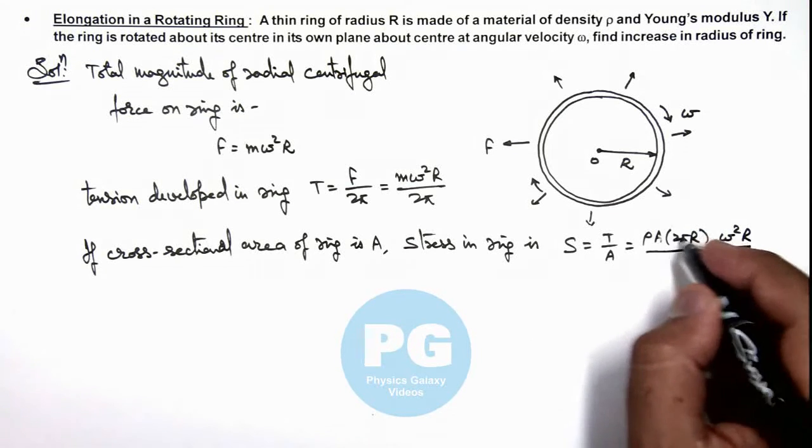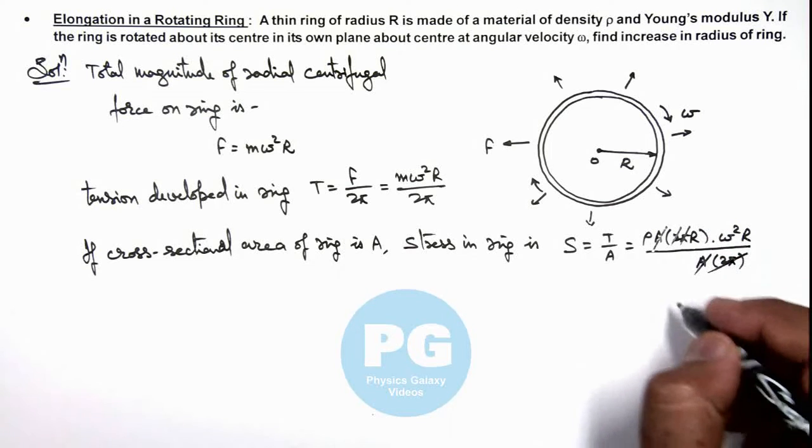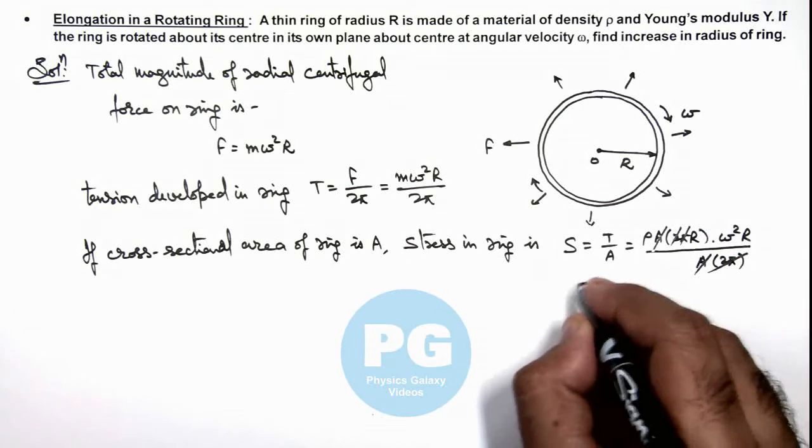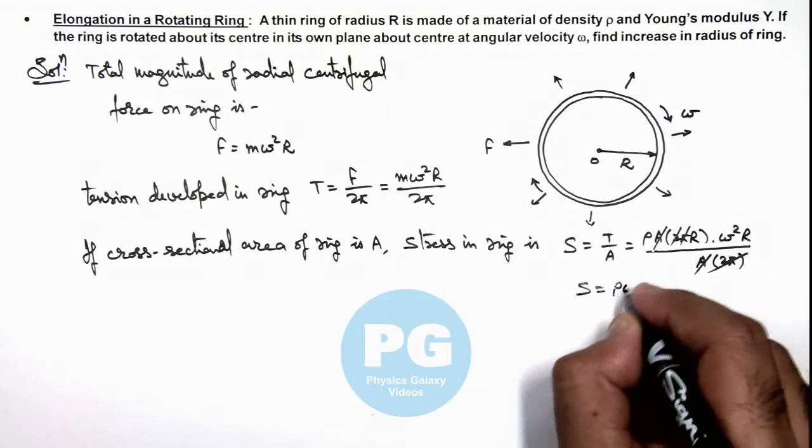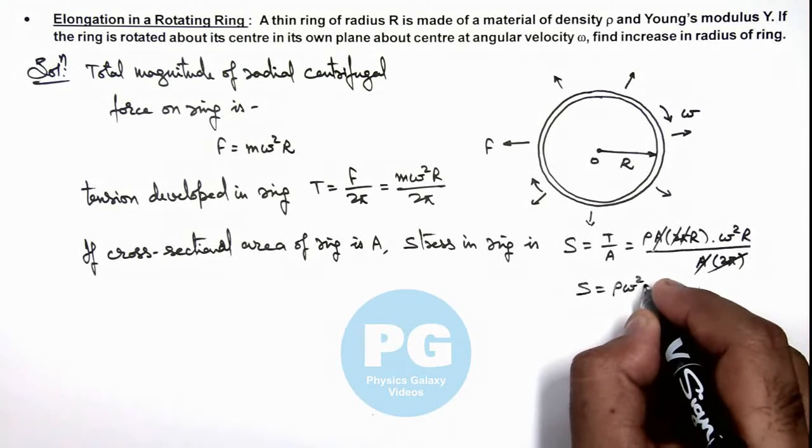Here, 2π gets cancelled out, and the value of stress we are getting is ρ ω² R².